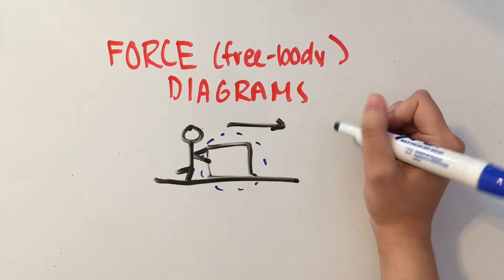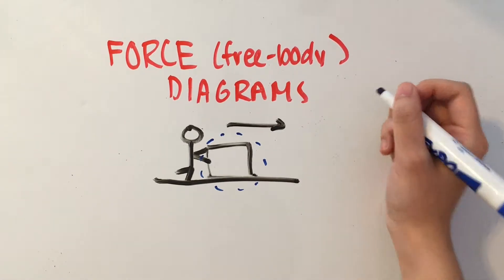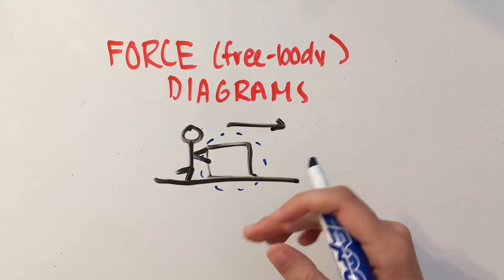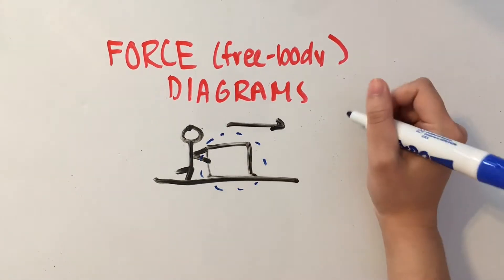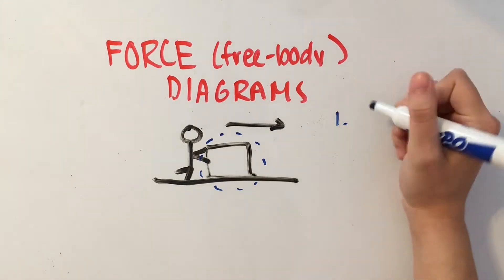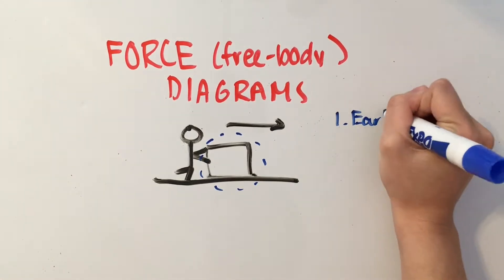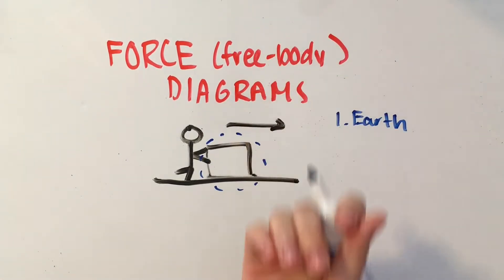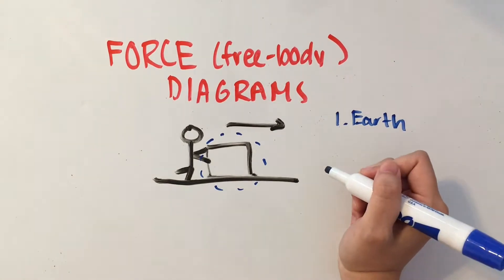Let's go ahead and determine what external objects are exerting forces on our system, which is the box. First of all we have the earth, and the earth is going to be pulling our box down towards the center of the earth.